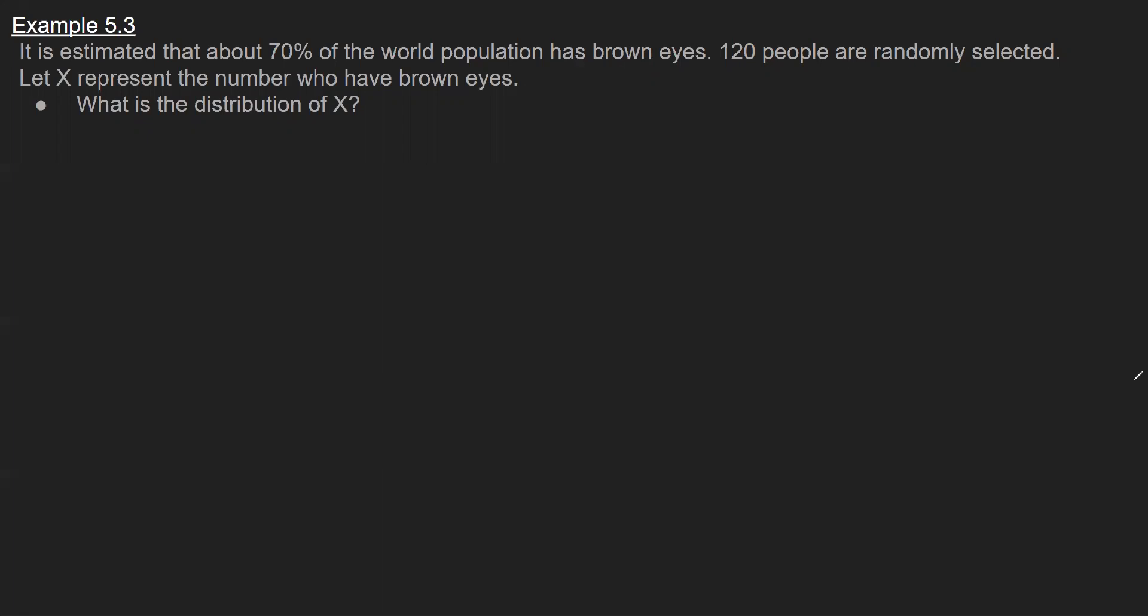In this problem we have an estimate that 70% of the world population has brown eyes, then we take a random sample of 120 people and we have a random variable that's counting the number who have brown eyes. The question asks what is the distribution of X?